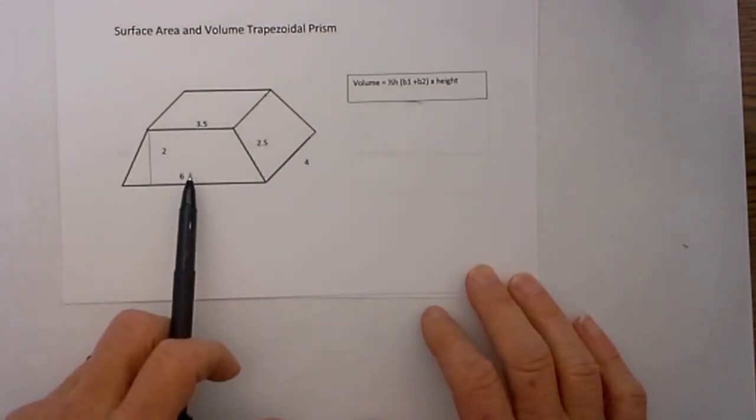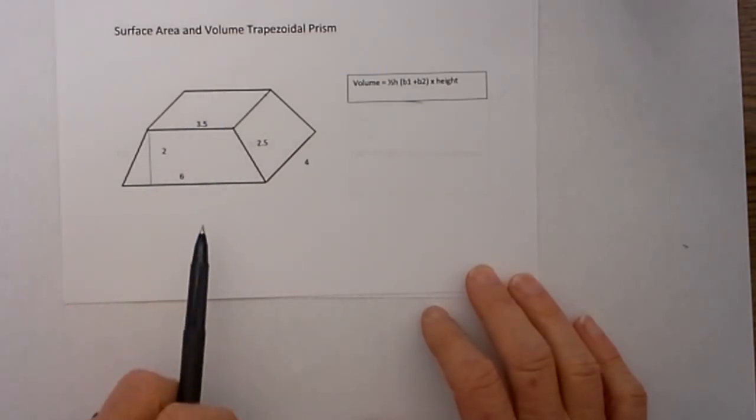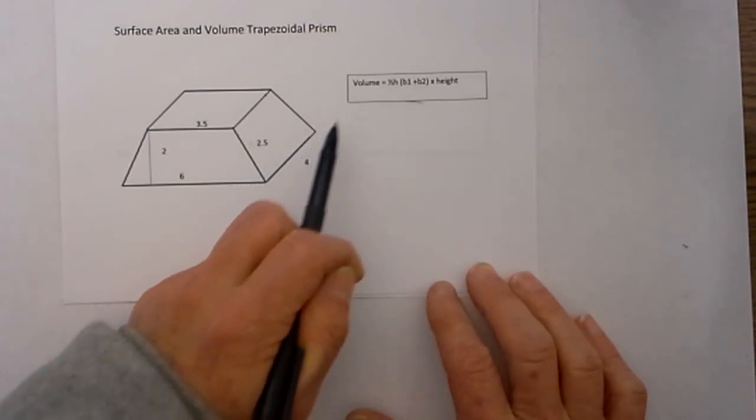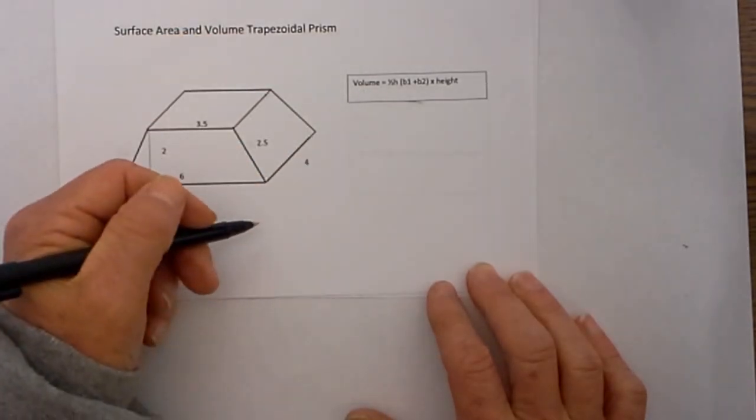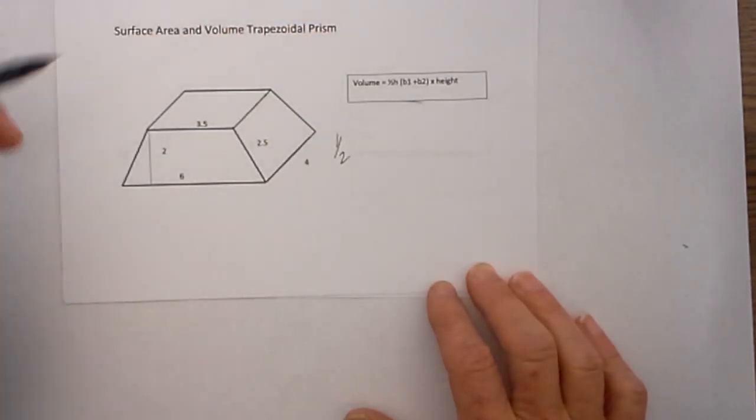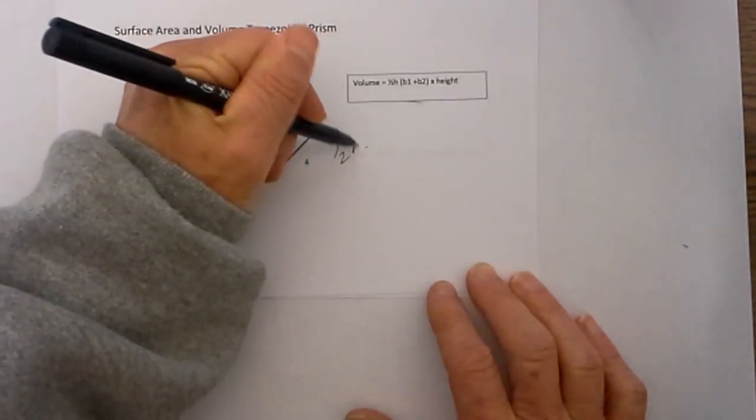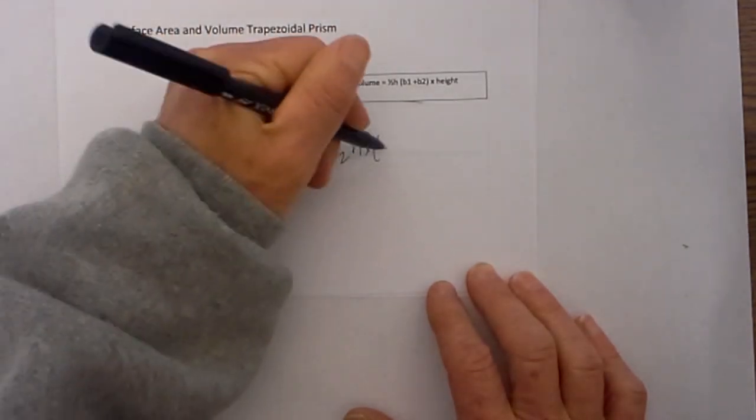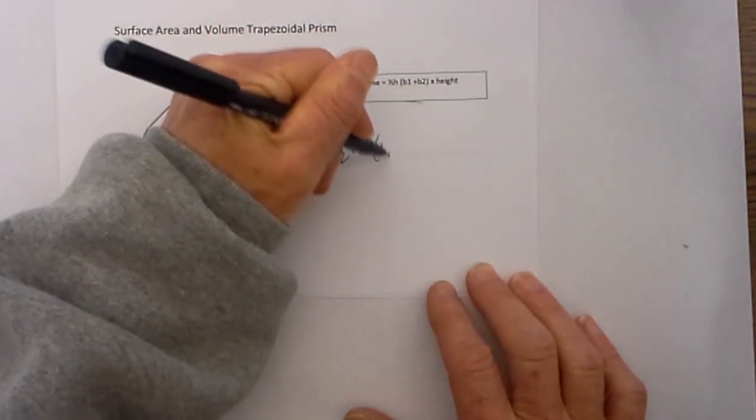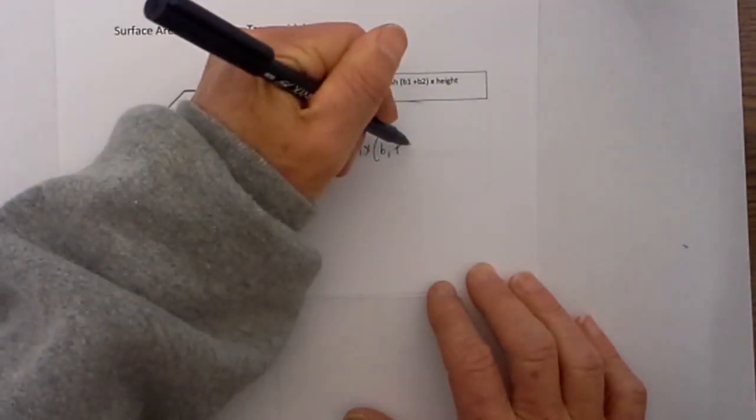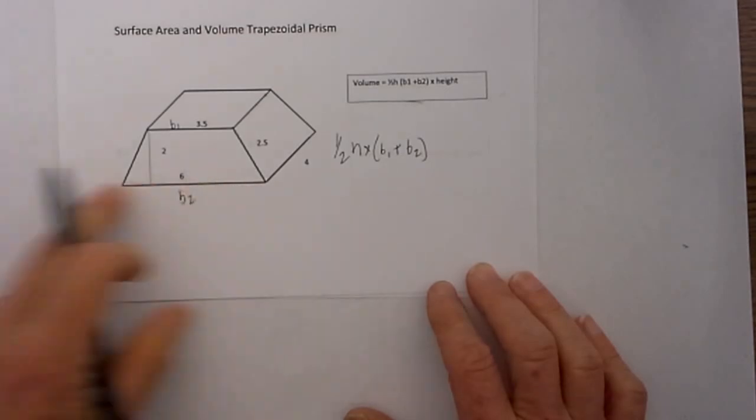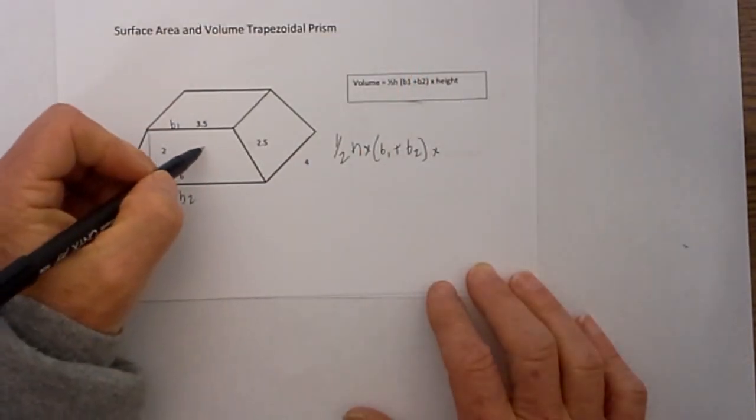The reason why this prism is a trapezoidal prism is that it has two bases that are trapezoids. The volume formula is equal to 1 half the height of the trapezoid times base 1 plus base 2, because with a trapezoid they are different lengths, times the height of the prism.